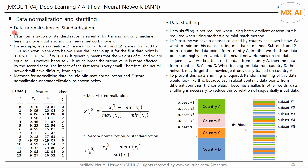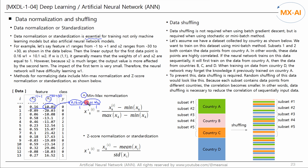Next, let's look at data normalization or standardization. Data normalization is essential for training not only machine learning models, but also artificial neural network models. For example, let's say feature x1 ranges from negative 1 to positive 1, and x2 ranges from negative 30 to positive 30. Then the linear output for the first data point is 0.16·w1 plus 10.01·w2. If w is (1,1), the weights of x1 and x2 are equal to 1. However, because x2 is much larger, the output value is more affected by the second term and the impact of the first term is very small. Therefore, the neural network will have difficulty learning w1. Methods for normalizing data include min-max normalization and z-score normalization or standardization.